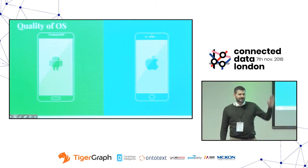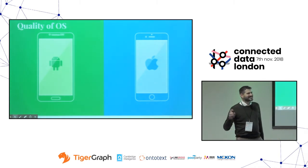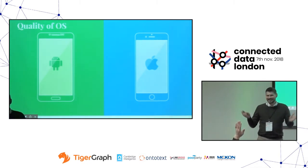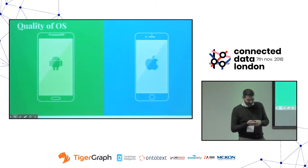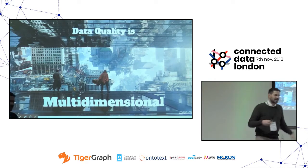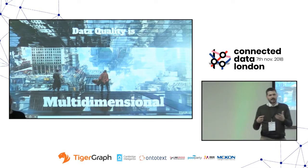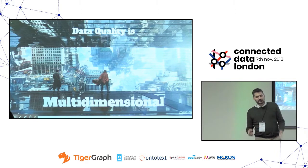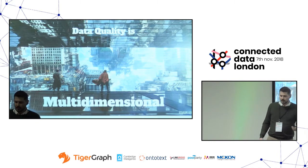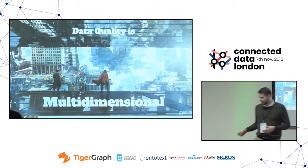Who's an Android person here? Who's iOS? There are different aspects to quality also in operating systems. The point I'm trying to make is that data quality, like any kind of quality, is multidimensional. There are many different aspects you can evaluate to assess the quality of a dataset. It's not black and white — the same thing can be good for one case and not good for another.